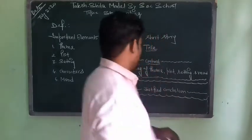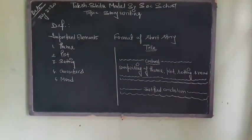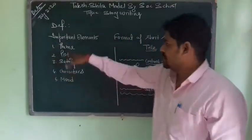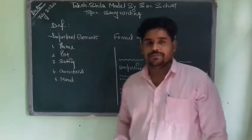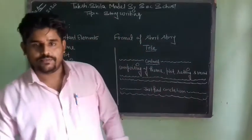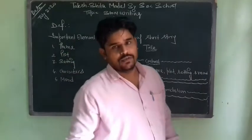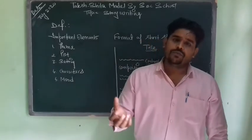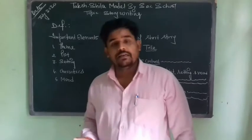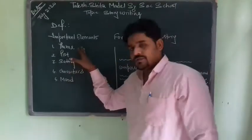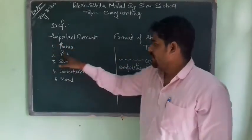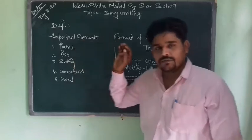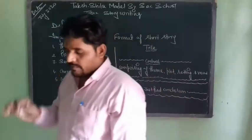Now let us move on to these important elements of story writing. First of all, the theme of the story. Before we sit down to write a story we should think about the theme. Theme is an idea on which the entire story is based, or it is an idea which runs through the story. How will we come to know about this idea? This idea will be given to us in the story question.